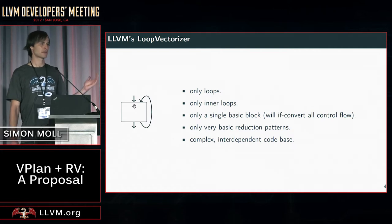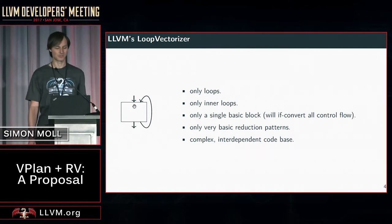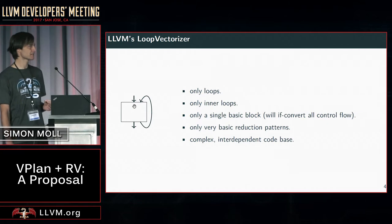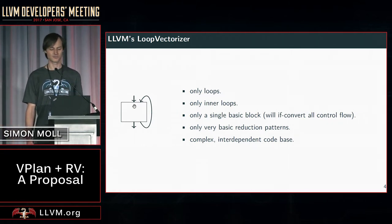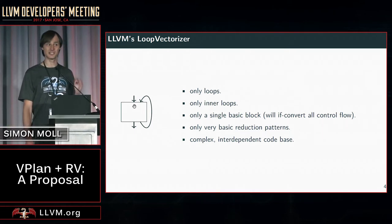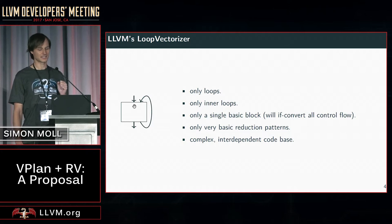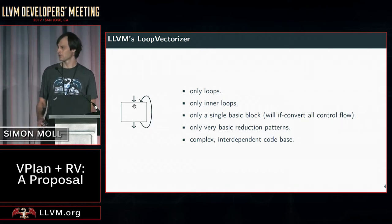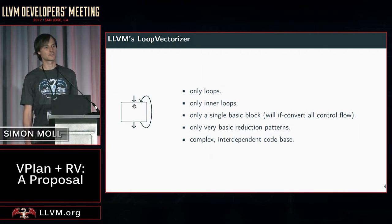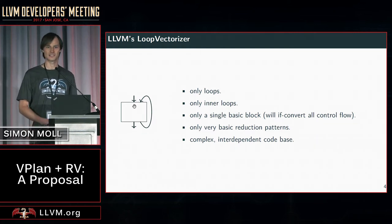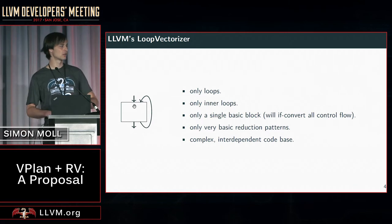But what is the problem with Clang here? Why won't it vectorize that? The problem is that LLVM's loop vectorizer is, in a way, very basic. It can only handle loops — specifically, it has to be an innermost loop, and it has to be a single basic block loop. If there's any control flow inside the innermost loop, it will if-convert it all into a single block. On top of that, you only support very basic reduction patterns, and you have this very complex interdependent code base which has grown over time.